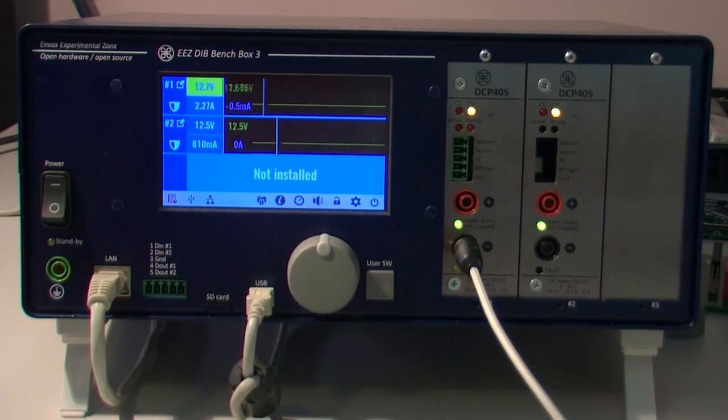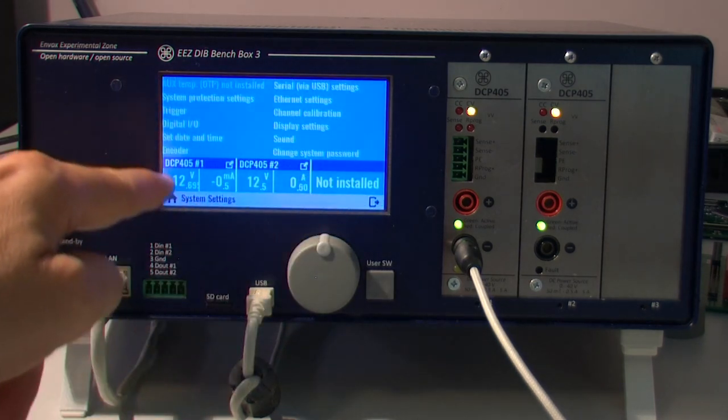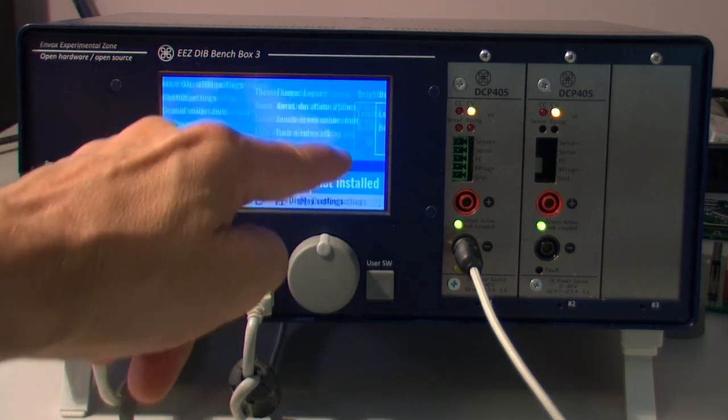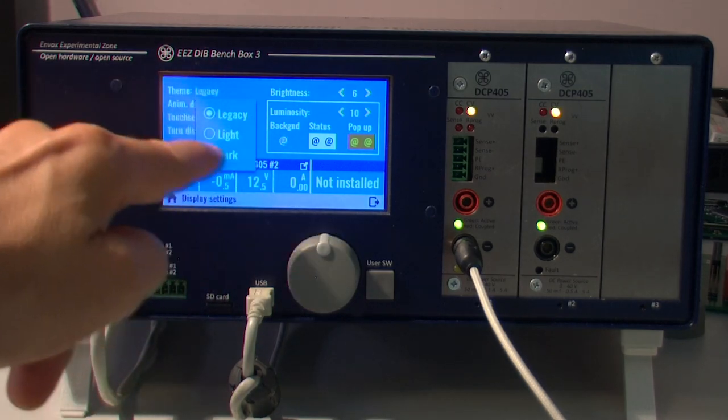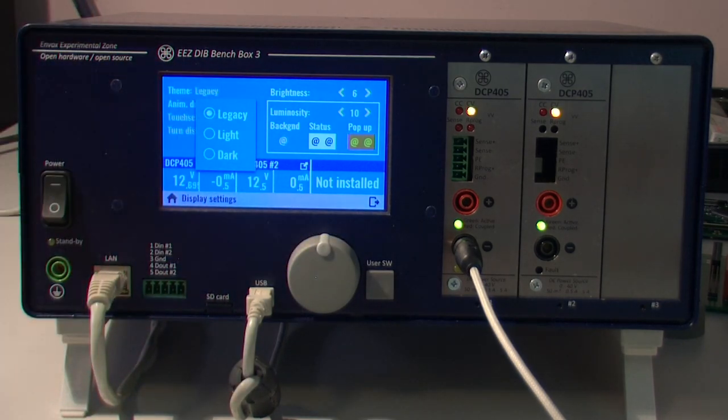Now we have possibility to change all colors on the screen. So, we introduced color themes. And right now we have three different. Like legacy. We can go in system settings. Display. So, theme there is a legacy, which looks like our previous project.